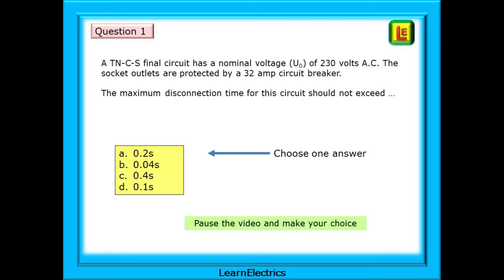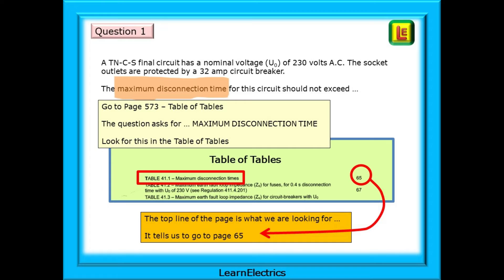The clue is in the question, Maximum disconnection time. With practice, you will know that there is a table for this. We just need to find it. Go to page 573, Table of Tables. The question asks for maximum disconnection time. Look for this in the table of tables. And the very top line of page 573 is what we are looking for, word for word. It tells us to go to page 65.